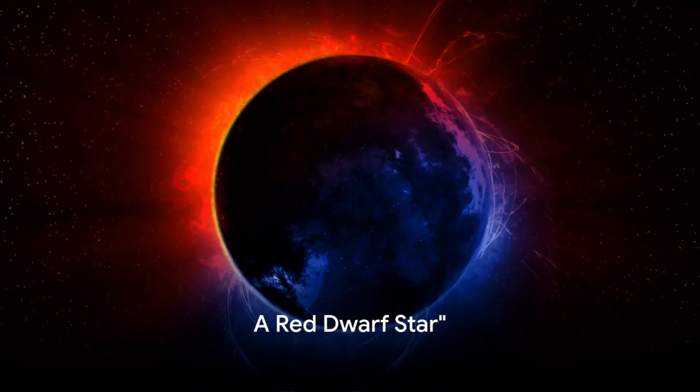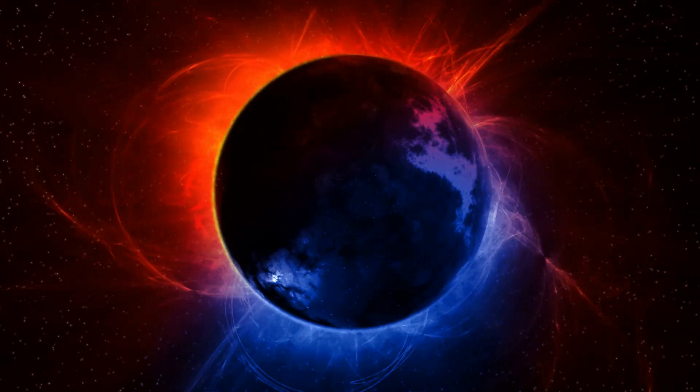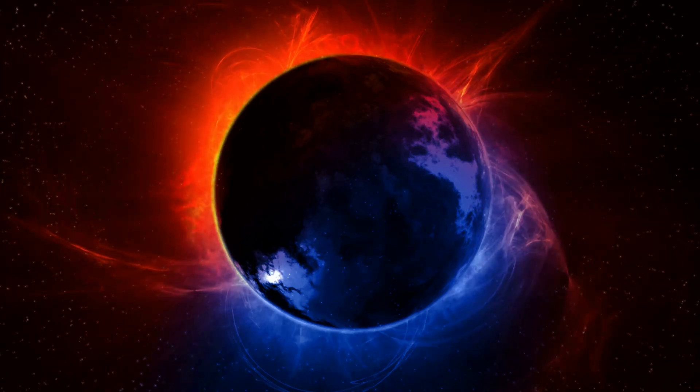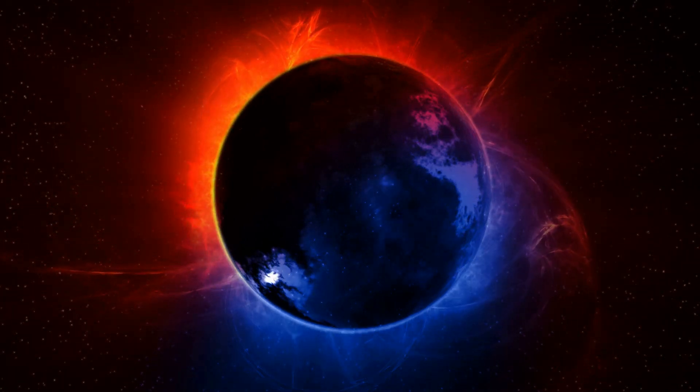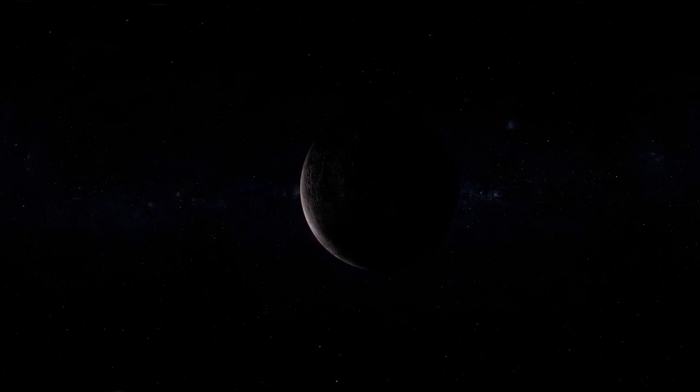Proxima Centauri, a red dwarf star, is not just our closest neighbor, but also an intriguing one. Now, what exactly is a red dwarf star, you might wonder? Well, these are the most common type of stars in the Milky Way, comprising about three-quarters of all the stars in our galaxy. Their size is relatively small, about one-tenth to half the mass of our sun. Proxima Centauri, in particular, is a petite star, with only about an eighth of the sun's mass.